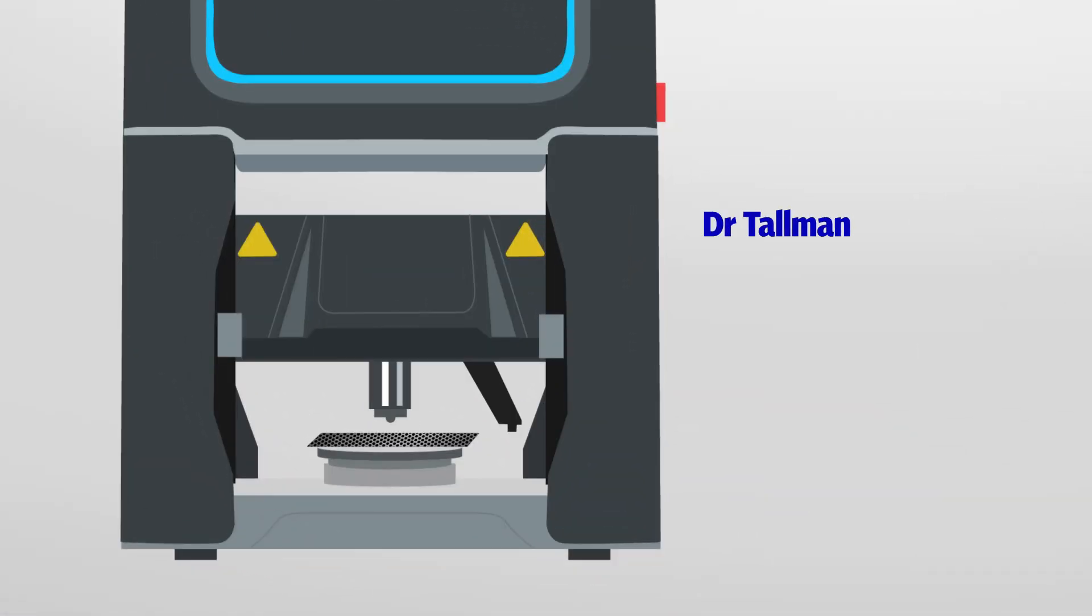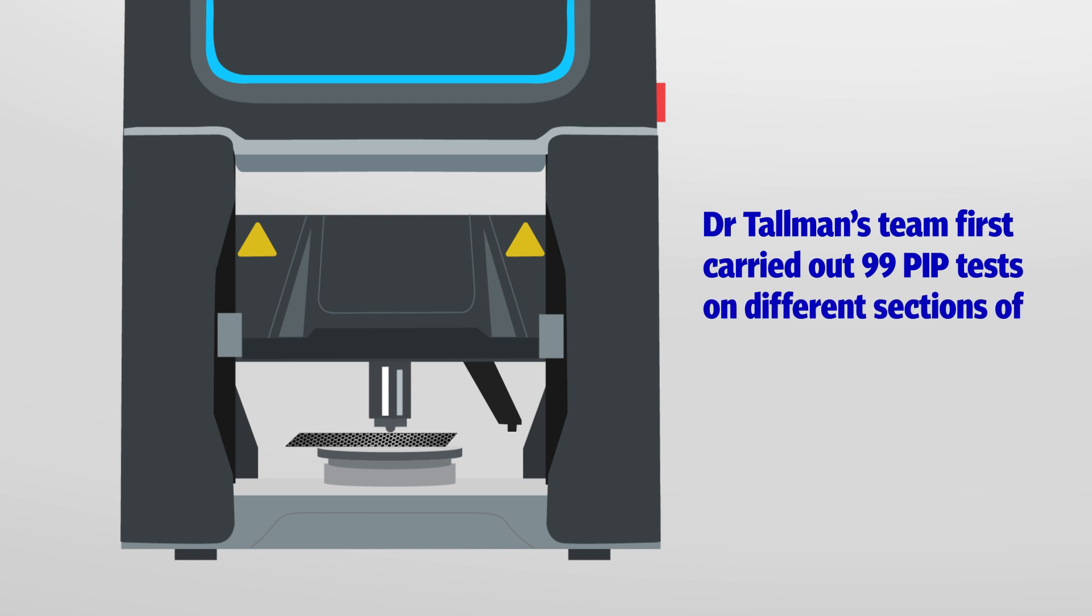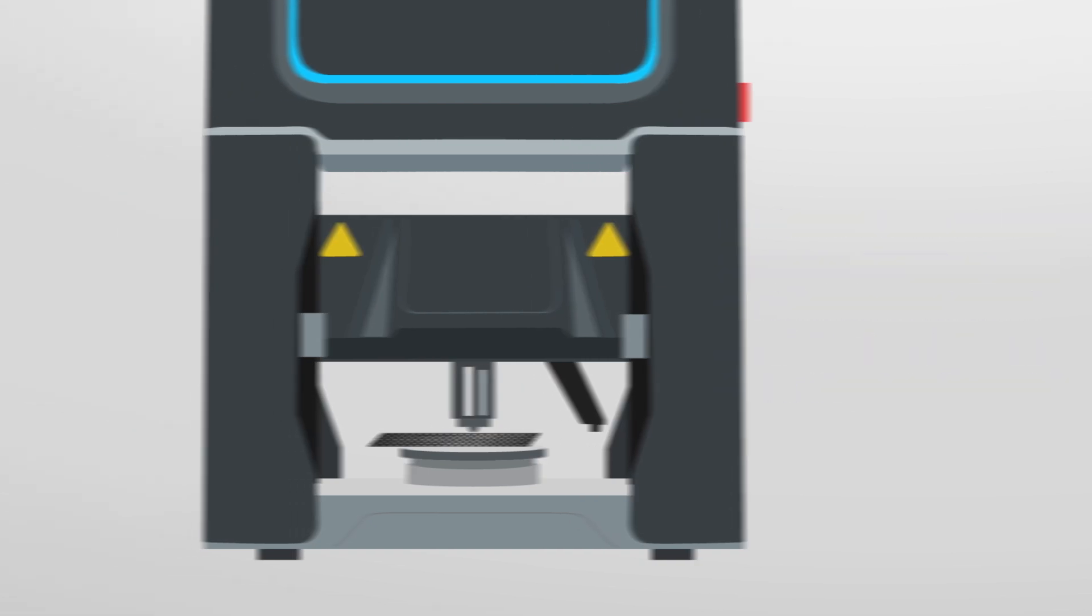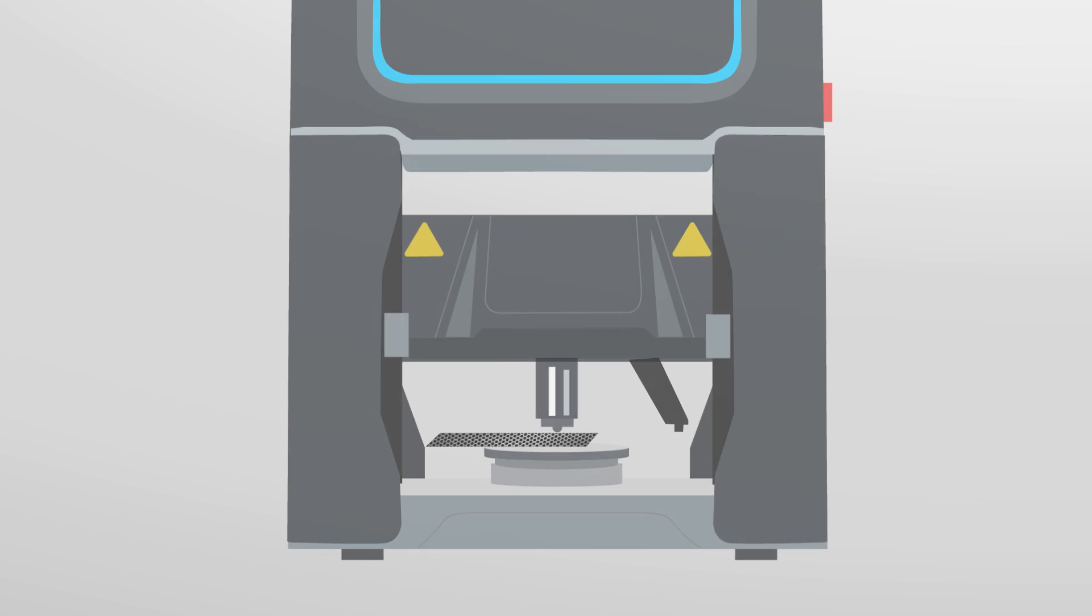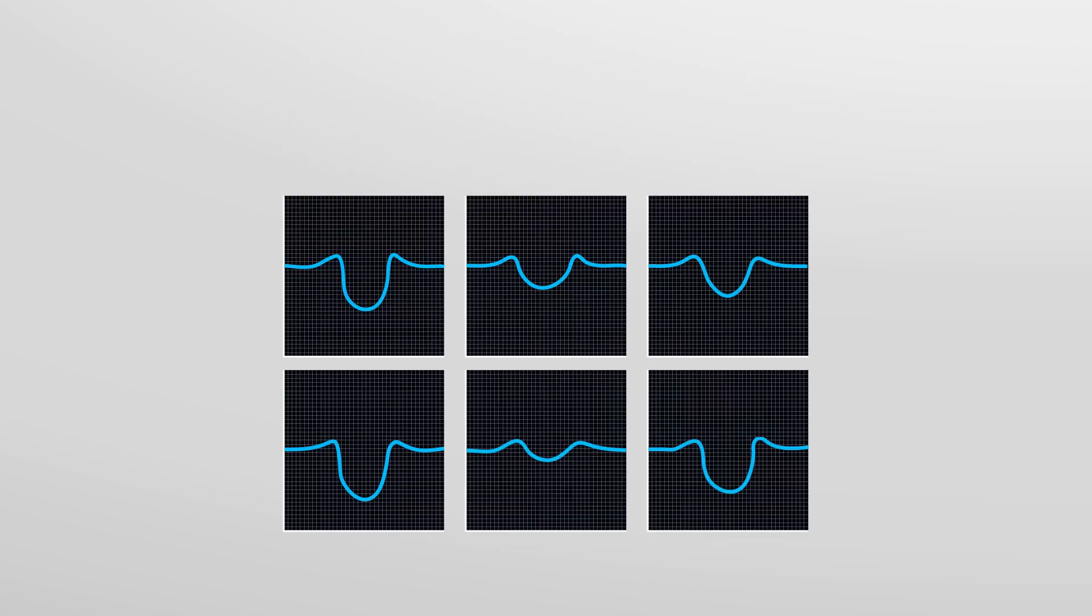In their experiment, Dr. Tallman's team first carried out 99 PIP tests on different sections of an aluminum alloy plate, not a 3D printed sample. The aluminum plate did not have the defects found in 3D printed samples. Despite this, each test gave a slightly different strength.